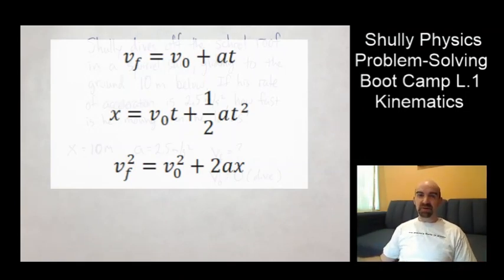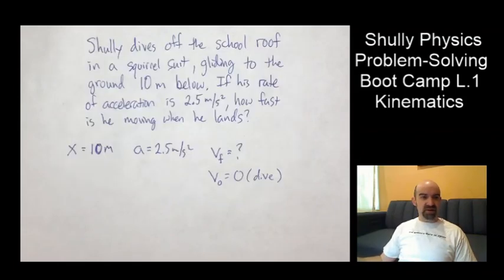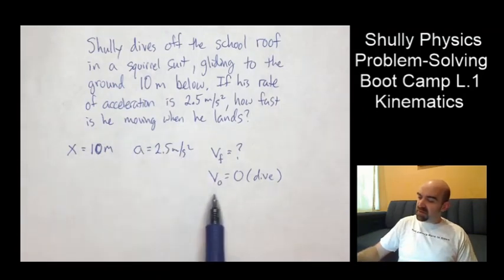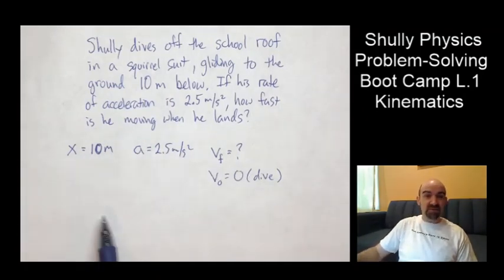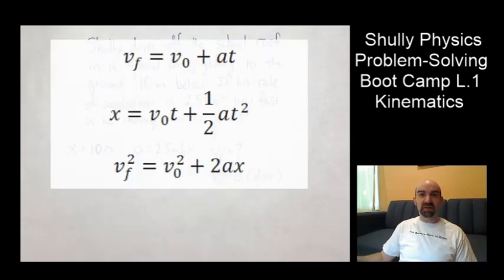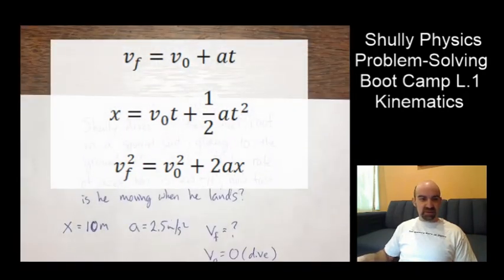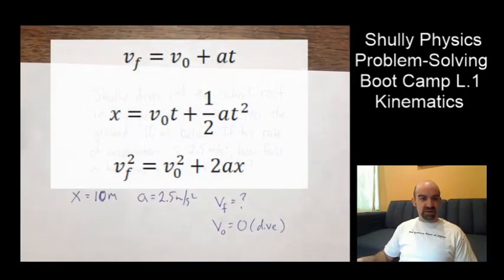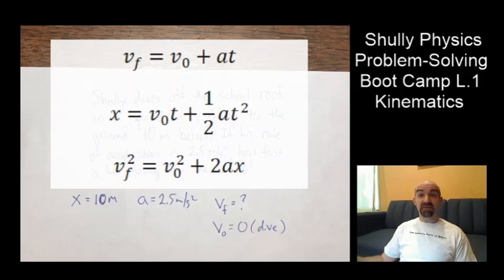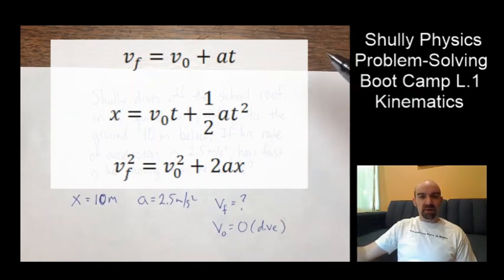So likewise, the numbers and the data that you have here, these are like the screws or the nails. And looking at the set of equations is like looking at the hammer or the screwdriver. Which one should I select with the given information that I've got here? So with the given information, that's all I need there. 10 meters is the X. I got the A and VF and V0.